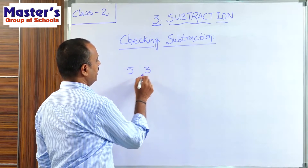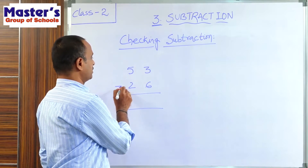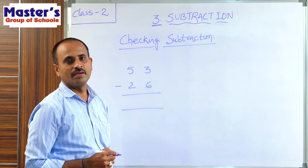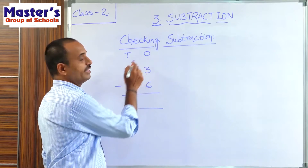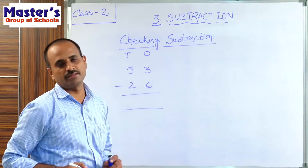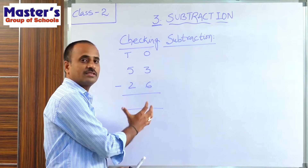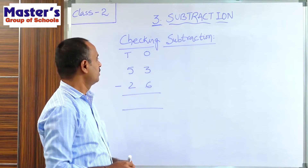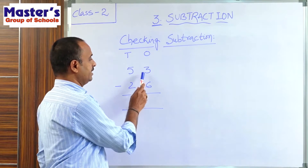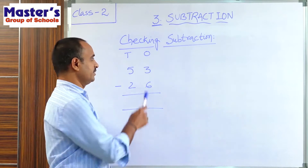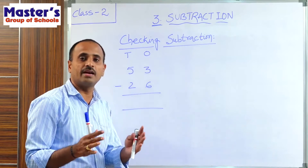So the two numbers are 53 and 26. The first number is 53 and the second number is 26. Write the places first: this is the 1's place and this is the 10's place. 3 and 6 are present in the 1's place; 5 and 2 are present in the 10's place. Now do the subtraction, then we can verify whether the answer is correct or not.